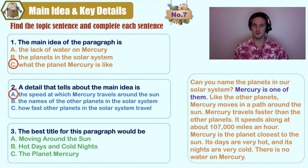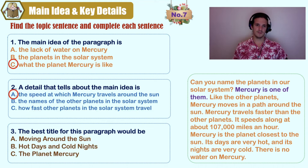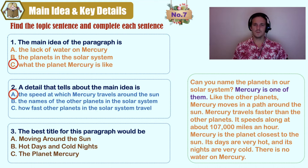That's another clue you can use. For the title: A) Moving Around the Sun, B) Hot Days and Cold Nights, C) the Planet Mercury. Look at the main idea — Mercury. Which title uses Mercury? Only C, the Planet Mercury.